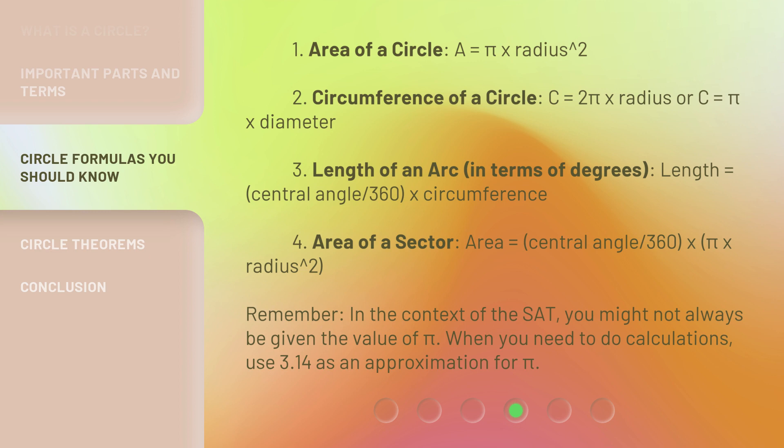Remember, in the context of the SAT, you might not always be given the value of π. When you need to do calculations, use 3.14 as an approximation for π.